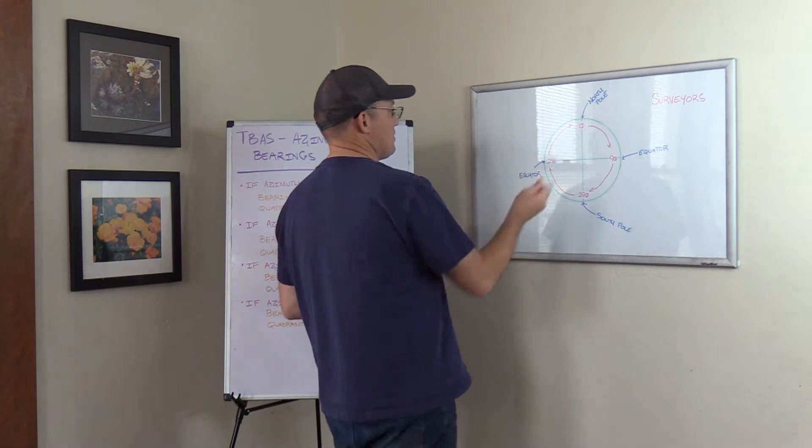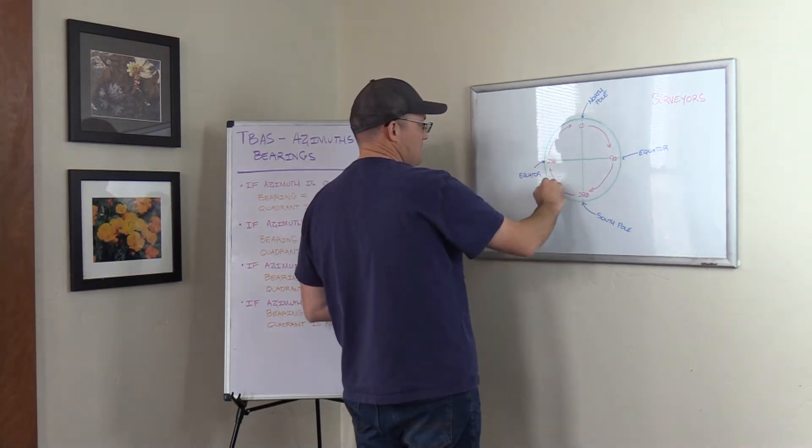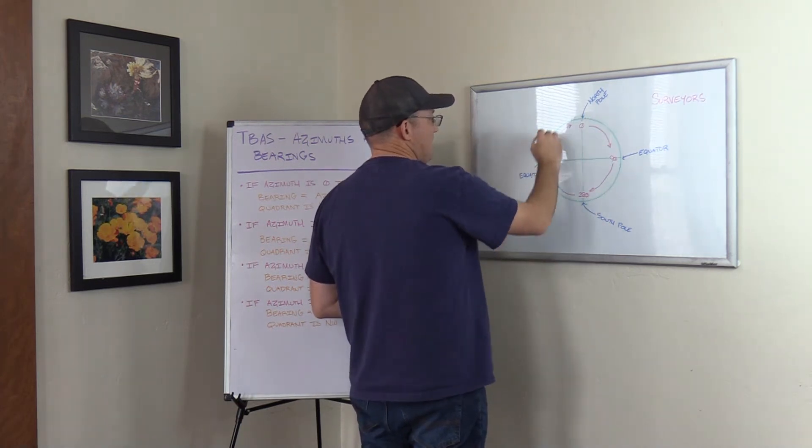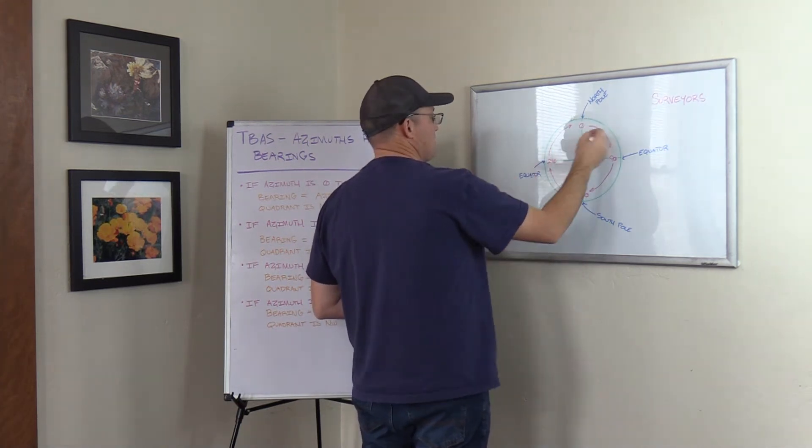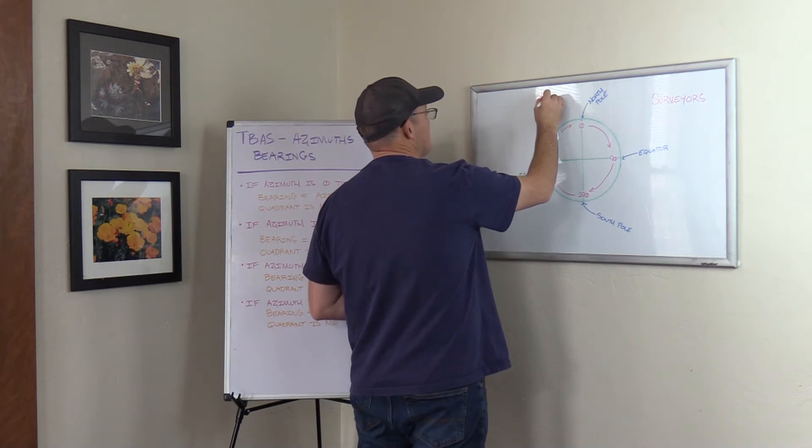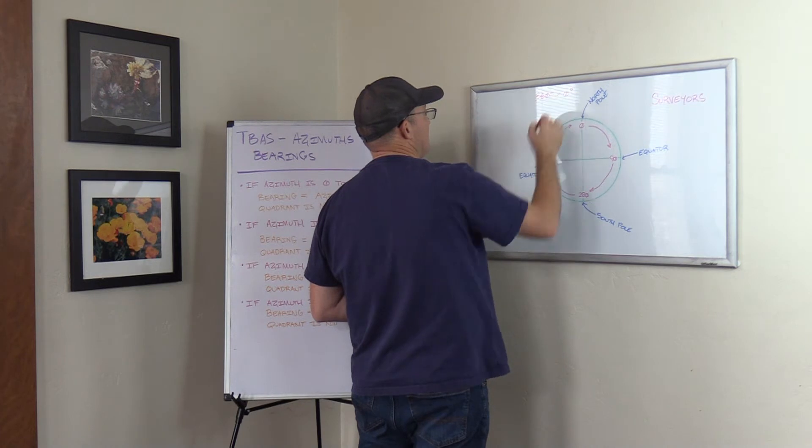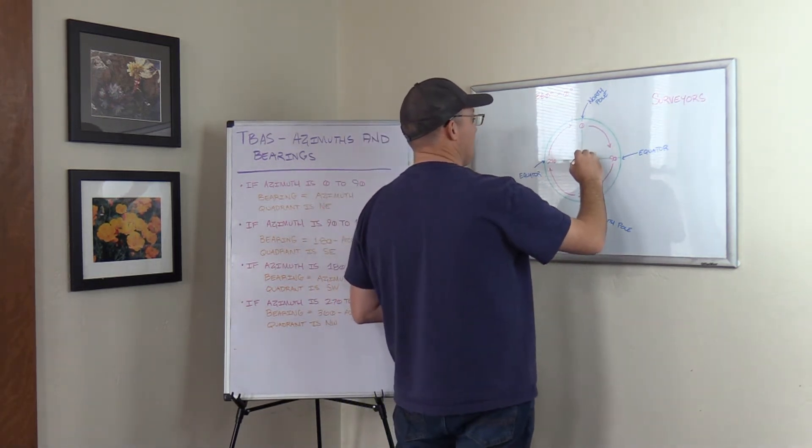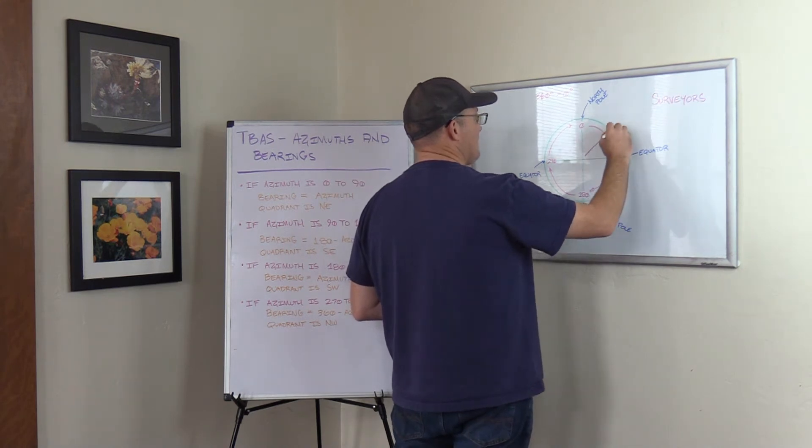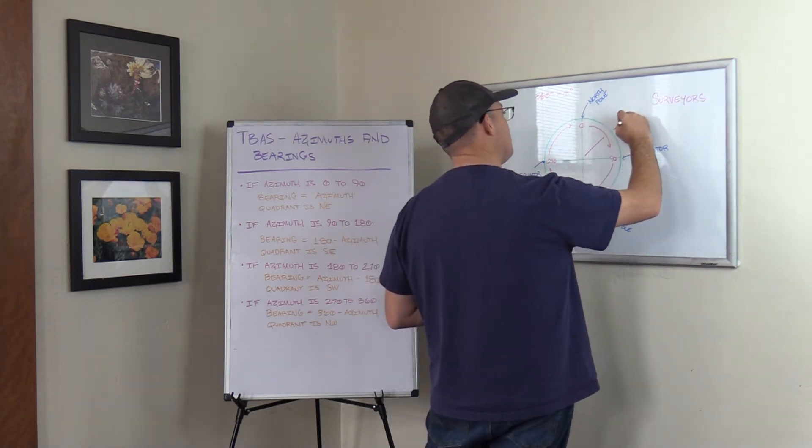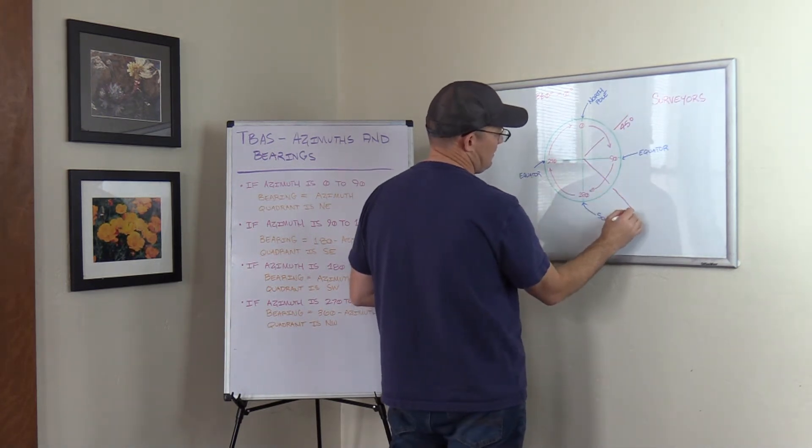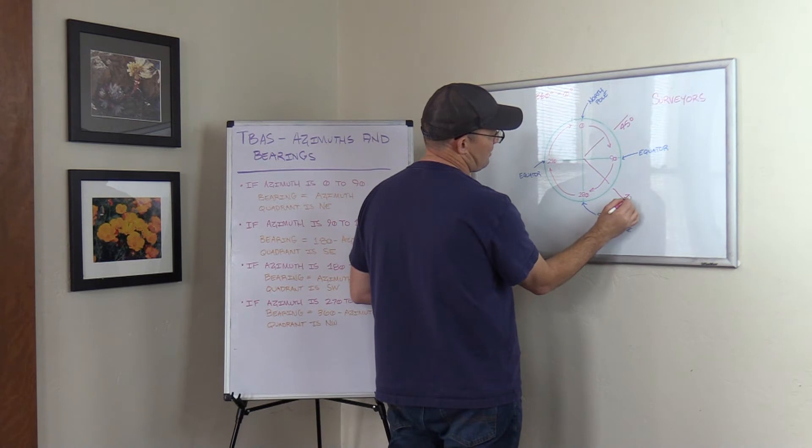Azimuths start at zero. They go clockwise around the compass. They start at zero and they come back to 360 or zero. So on our compass, 360 degrees is also equal to zero degrees. That's where the dial starts over. So let's just plot some common azimuths here for you guys. If we had a line coming out this direction, that's going to be roughly 45 degrees. That's that azimuth. Down here, this azimuth right here would be 135 degrees.